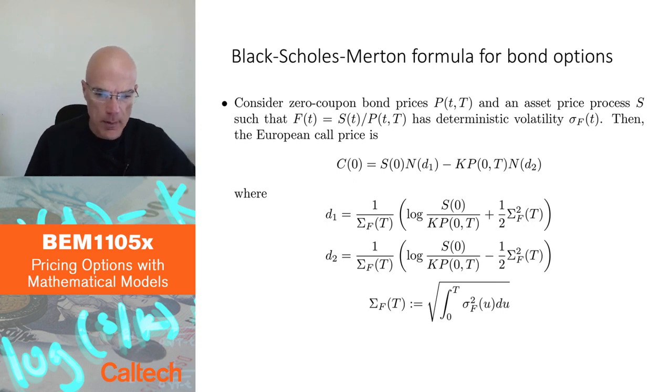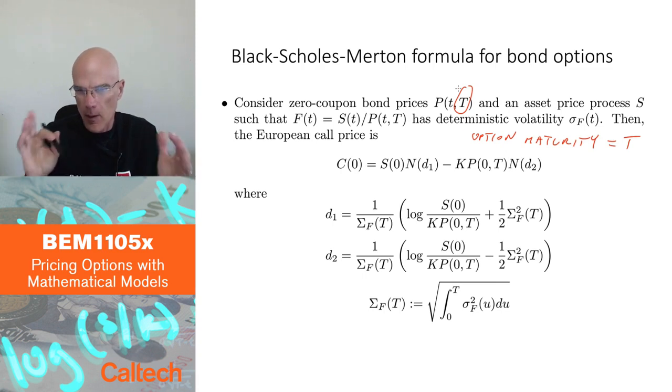I'm going to use as the numeraire, so the option has maturity capital T. I did not write that about maturity of the option. So option maturity is capital T. I'm going to look at the bond price, zero coupon bond, which has the same maturity as the maturity of the option. And I'm going to use that bond as my numeraire. I actually did this already when I was talking about market models for pricing caplets, but at that time we didn't really know the theory of change of numeraire.